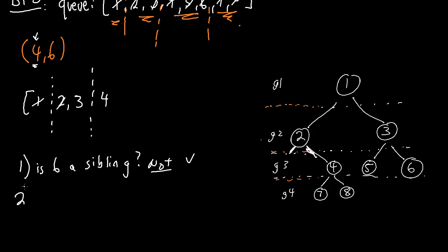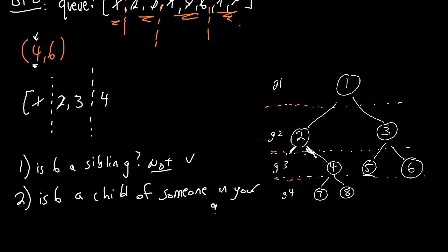The second question is: is 6 a child of someone in your generation? We just have to ask the rest of everybody in our generation - in this case 3 - if 3 has a kid that is 6. So we continue, we process 2, we process 3, and 3 says my kids are 5 and 6. At this point we found 6, so that means they are indeed cousins.